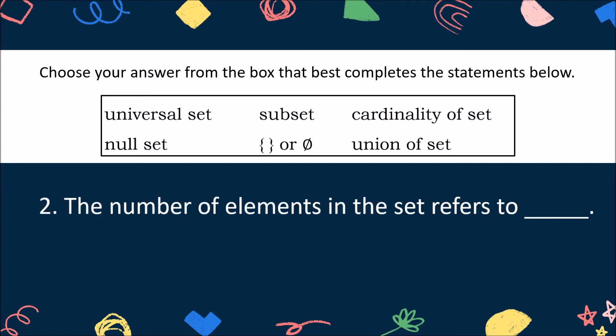Number 2. The number of elements in the set refers to blank. Great! The correct answer is cardinality of set.